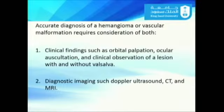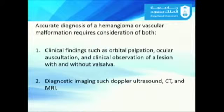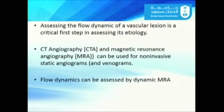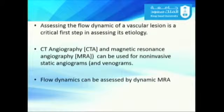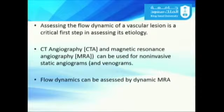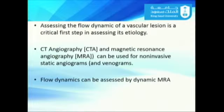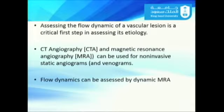For accurate diagnosis of hemangioma or other vascular malformations, we need two main things: clinical assessment and diagnostic imaging. Clinically, look for orbital palpation, ocular auscultation, and other clinical signs. For unclear cases, use Doppler ultrasound, CT, or MRI. It is very important to assess the flow dynamics of vascular lesions using CT angiography, MRA, MRV, or conventional angiography — including dynamic MRA for flow dynamics — to accurately determine whether it is venous, lymphatic, or arterial malformation.